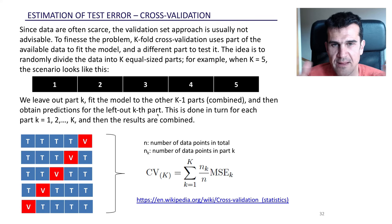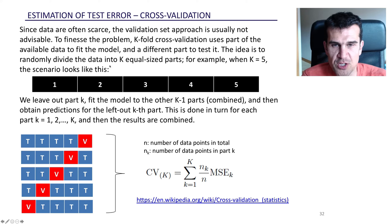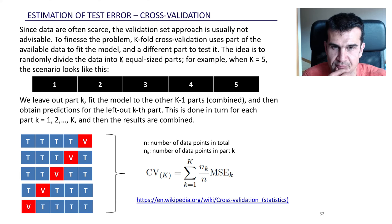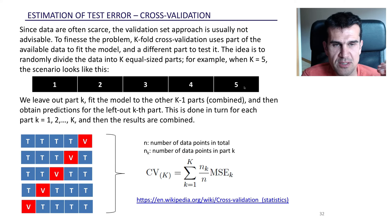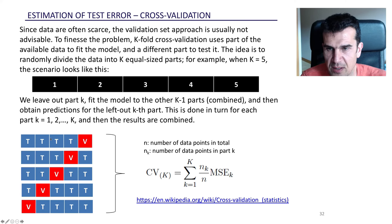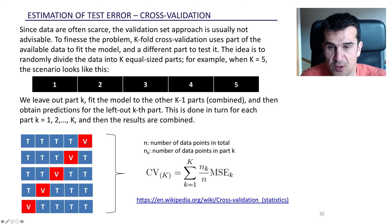The second technique is cross-validation, which is widely used in machine learning. The idea is to partition our dataset into k equal-sized parts. In this example I've partitioned it into five blocks of roughly equal size. We fit as many models as we have blocks — in this case five. For the first model, we use four of the blocks as the training set and the fifth block to compute the test error.